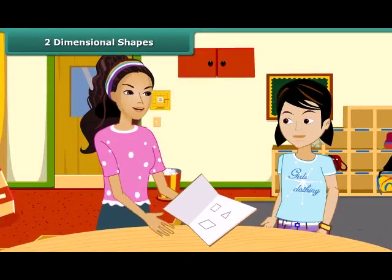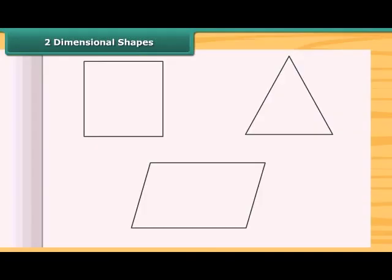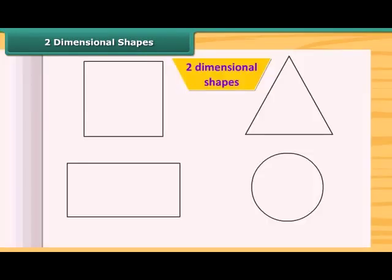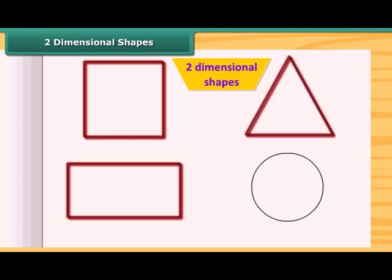Look at these shapes. These are all two-dimensional shapes. They have only two measurements: length and breadth. You mean all the shapes that we draw in our notebook are two-dimensional? Yes, you are right. All those shapes that we can draw in our paper and which have only two measurements are two-dimensional shapes. A square, rectangle, triangle, circle, etc. are the examples of two-dimensional shapes.